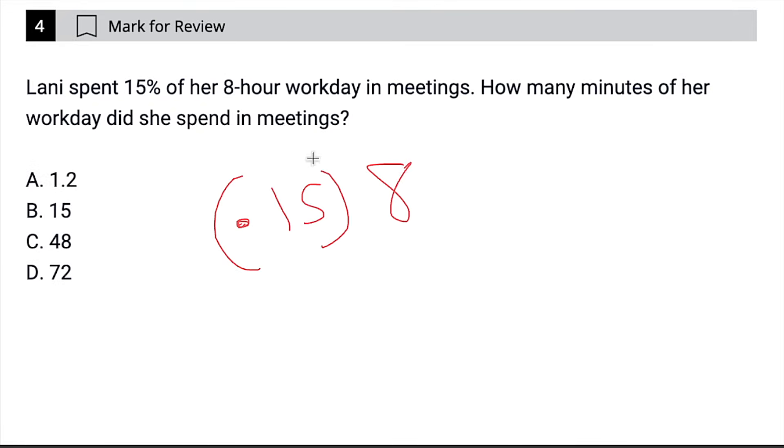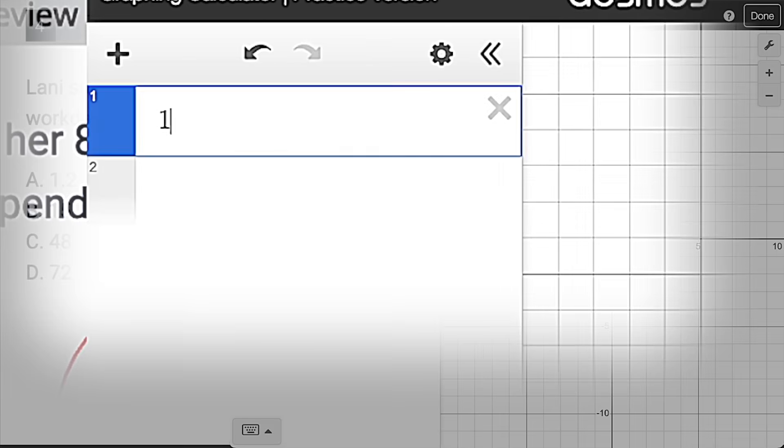You could be like, well, eight times 15, that's 120, so it's 1.2. Or you could just use Desmos real quick. 15% of eight is 1.2.